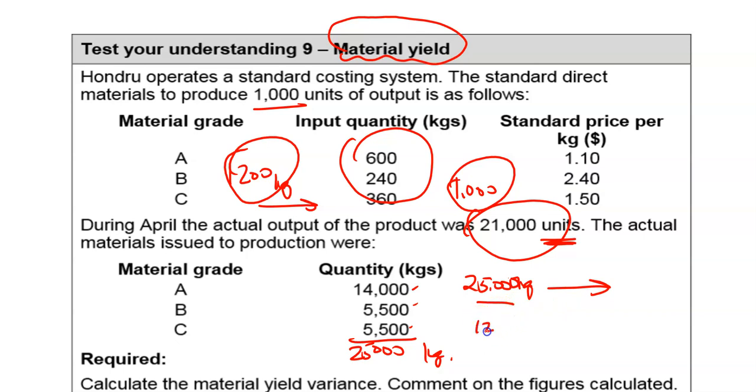So the argument is that 1200 kilograms should give you a thousand units because I'm interested in the output. Well, 25,000 kilograms should give us 25,000 divided by 1200 times 1000, and that should give us 20,833 units. So we should have made, using 25,000 kilograms, using the standard relationship, we should have come out with 20,833 units. But we came out with more. We actually came out with